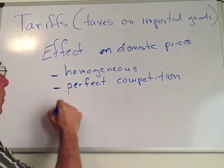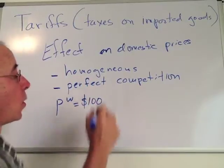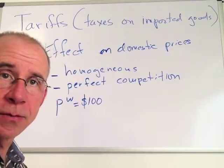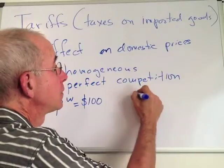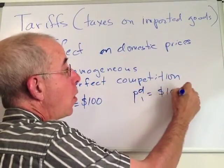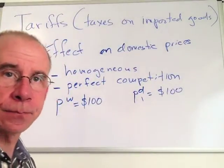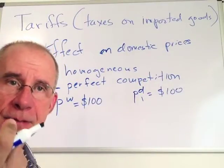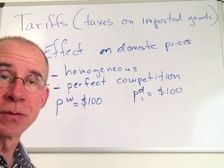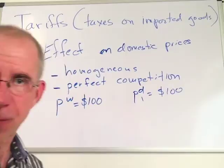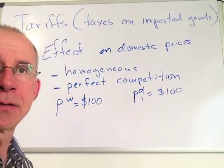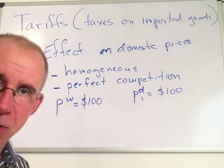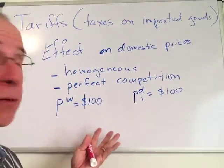Imagine that the world price of this product is $100 — the price charged in international markets. Originally, the domestic price under free trade is also $100. This is before the tariff. So domestic firms and foreign firms compete on an equal footing. If it's an imported good, the domestic firms are going to be irritated because the foreign competition is selling at $100, and domestic consumers can now buy the foreign good at $100.